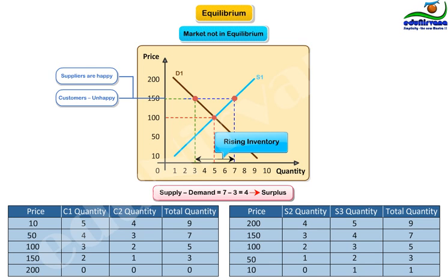Saddled with rising inventory and lower sales, the suppliers will try to reduce their prices to increase their sellable volumes and to reduce inventory. And in the process, they will move towards equilibrium price.